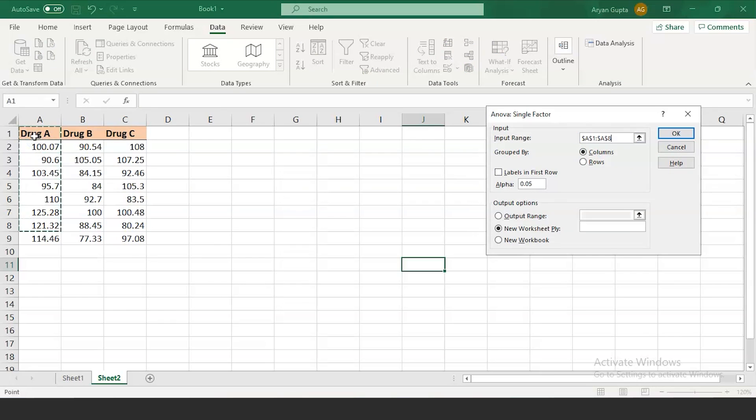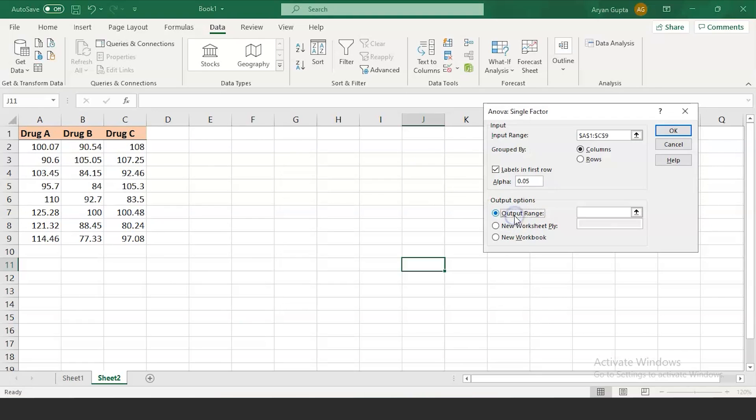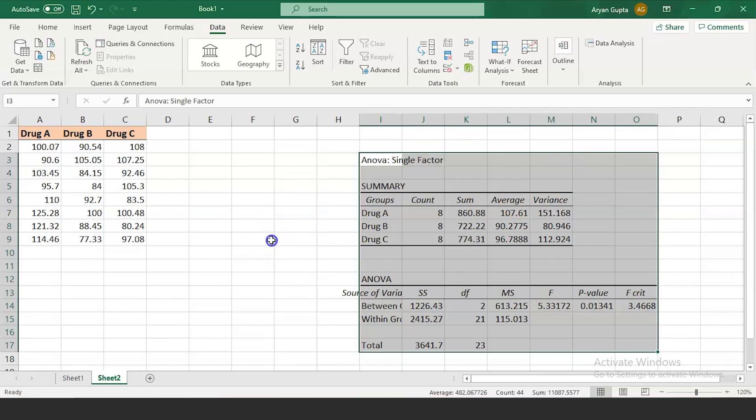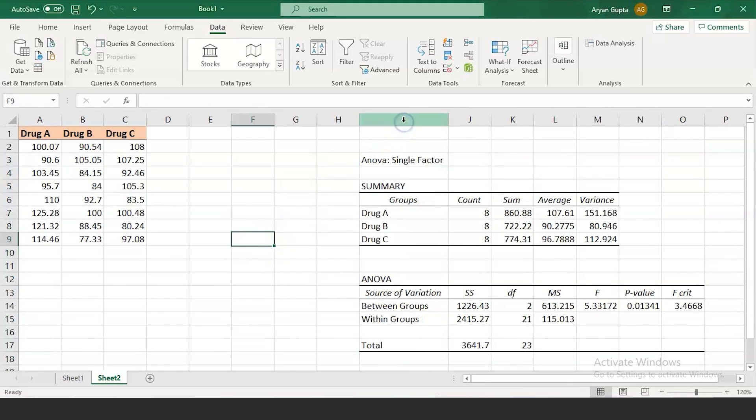Now it is asking for an input range. Select the data you have on the table. We have the labels in our first row and the alpha is 0.05. For the output range, we will get the output here on the same page. So we will select some cell in the same page and we will click OK.